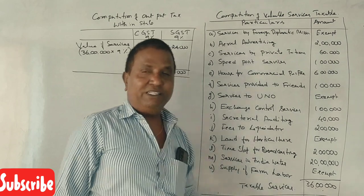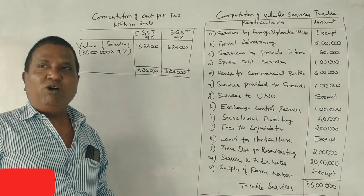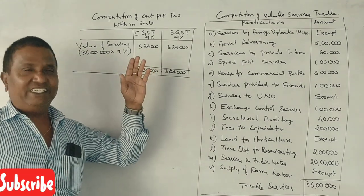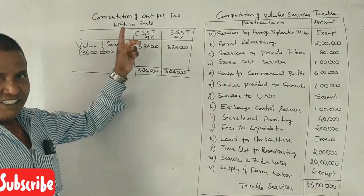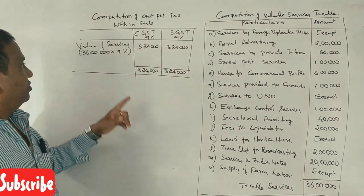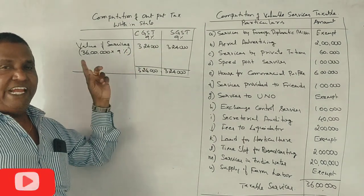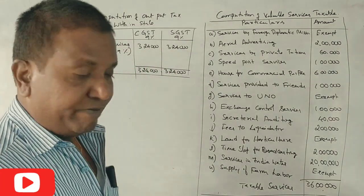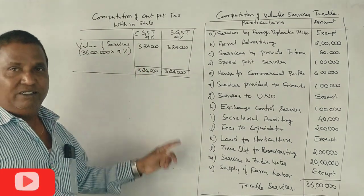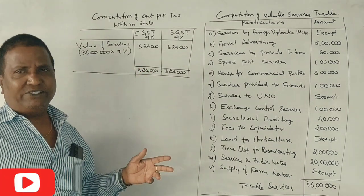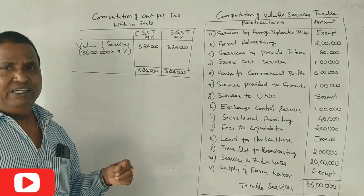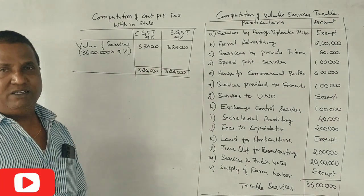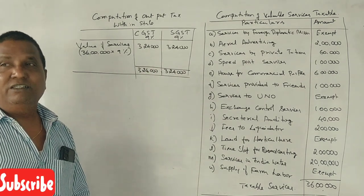The total value of services is ₹36,00,000. Now, since all services are provided within the state, it is CGST and SGST. At 18% GST: 9% CGST and 9% SGST. The 18% is split in half — 9% each.